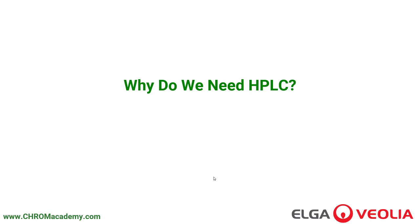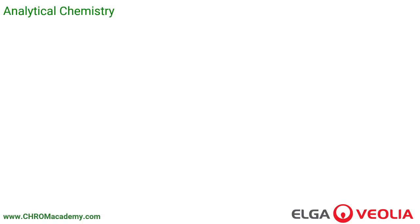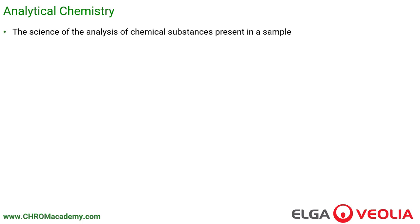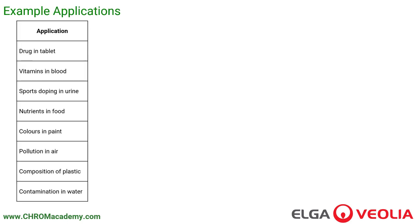This first section asks the question: why do we need HPLC? It's all to do with analytical chemistry. Analytical chemistry is the science of chemical substances present in a sample. We can chemically analyse pretty well anything in the world around us. Typical applications include measuring a drug in a tablet, vitamins in blood, sports doping in urine, nutrients in food, colours in paint, pollution in air, composition of plastic, and contamination in water.